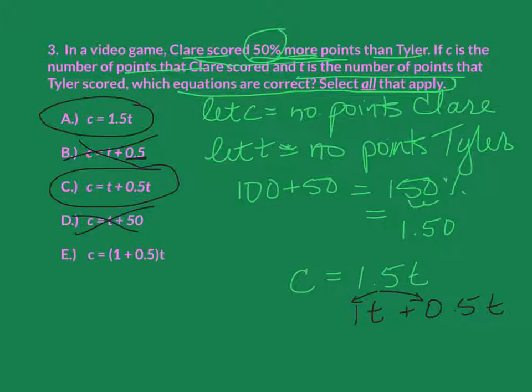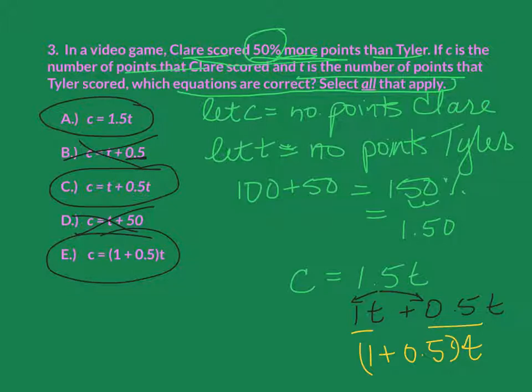And then this one - well, there's our distributive property. Look at that, because if I pull out my 1 and my 0.5, I'd have 1 plus 0.5. Put that in parentheses. The quantity of 1 plus 0.5, or 5 tenths, times T. And that's going to be equal to C. So I've got those three that are equal. I've got A, C, and E as my answers for this one.